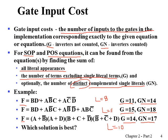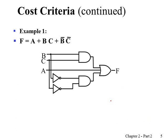So if all three functions are identical, then of course, whichever criteria you choose — literal cost, gate input cost, or gate input with NOTs — the first one is the best. Here is another example showing the definition of gate input cost, gate input cost with NOTs, and literals as they are interpreted in actual circuit implementation.